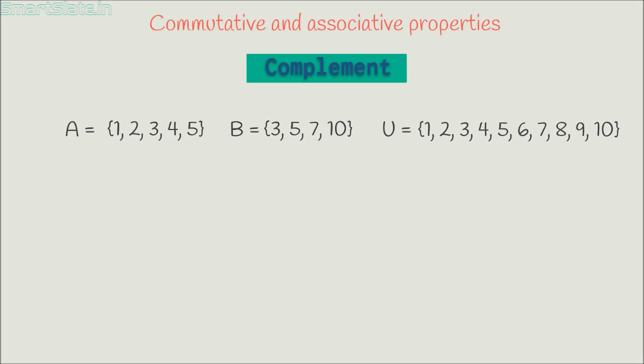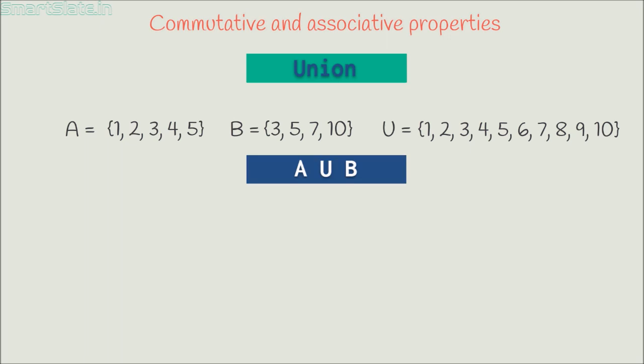The first operation we are going to study is union. Union of these two sets is a set of all elements which are either in set A or in set B or in both. Hence A union B is the set with elements 1, 2, 3, 4, 5, 7 and 10.